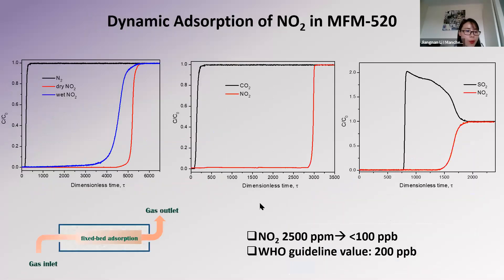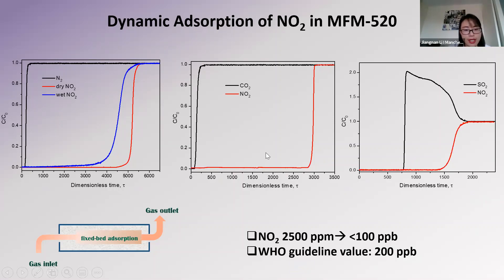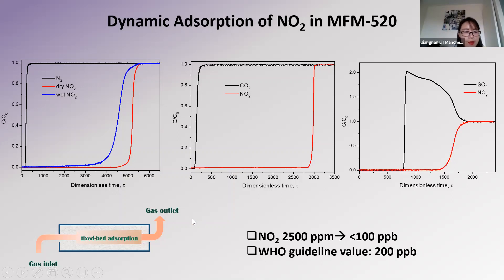To evaluate the separation capacity, dynamic breakthrough experiments were carried out, and various gas mixtures containing 2500 ppm NO2 were flowed through a MF520 packed column. Clean separations were achieved under various conditions, including dry and humid gas mixtures and in the presence of competitive gases CO2 and even SO2, which confirmed the excellent separation capacity of MF520. At the end of the column, the concentration of NO2 was reduced to less than 100 ppb — much lower than in post-SCR reactions — and this level fulfills the WHO guidelines.